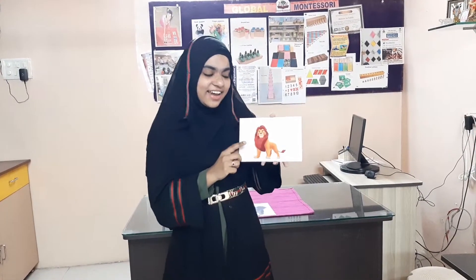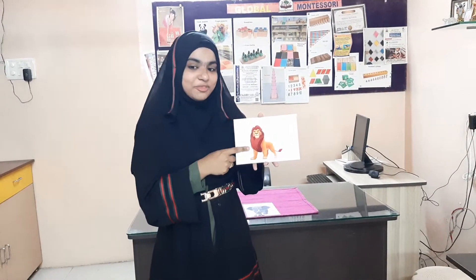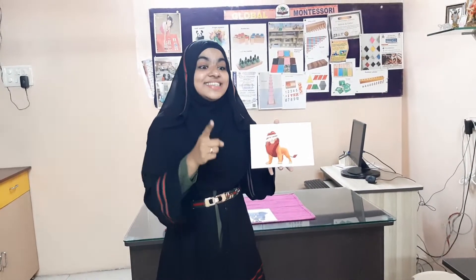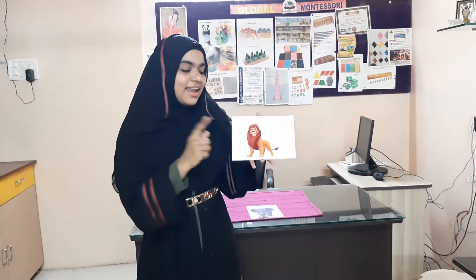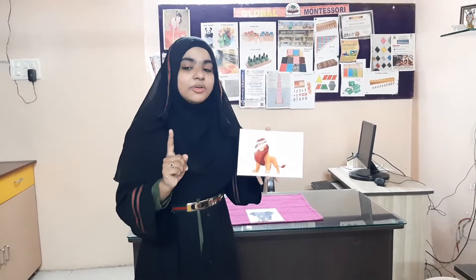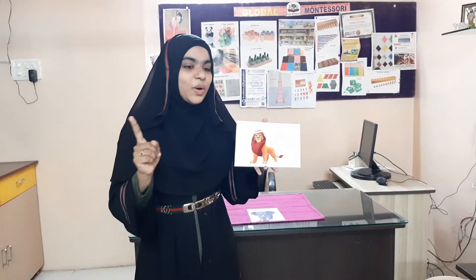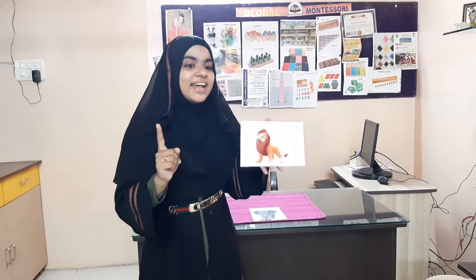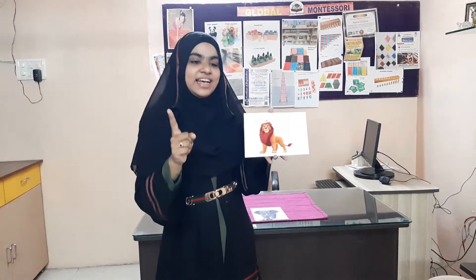Who has seen the Lion King film? In Lion King, the lion's name is Mufasa, and the cub's name is Simba. So Simba is a cub — C-U-B, cub. That is what we call a baby lion. The female lion is called a lioness. So lion is the daddy, lioness is the mummy, and cub is the baby.